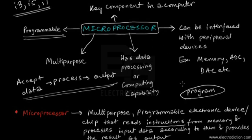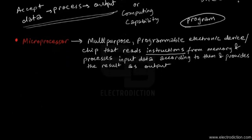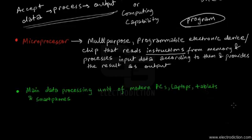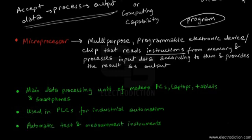Because it is a programmable device, we need not change the hardware whenever we require it to perform different functions — we can just change the program. A microprocessor is used as the main data processing unit of modern-day PCs, laptops, tablets, and smartphones. It is also used as the main data processing and logic control unit of PLCs — programmable logic controllers — for industrial automation, automatic test and measurement instruments, and consumer electronics.